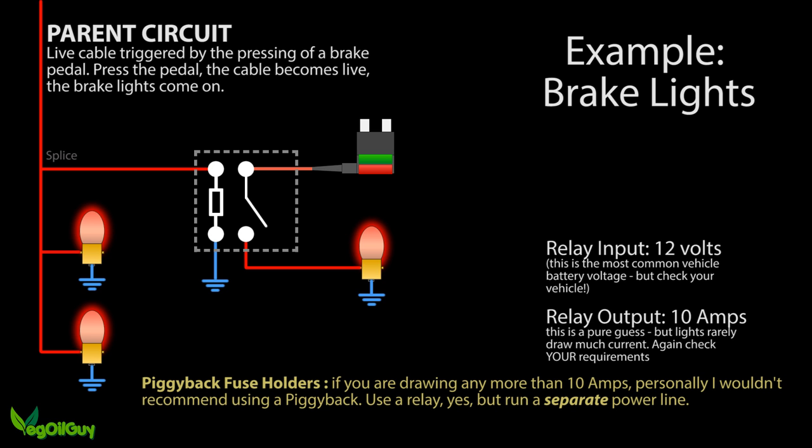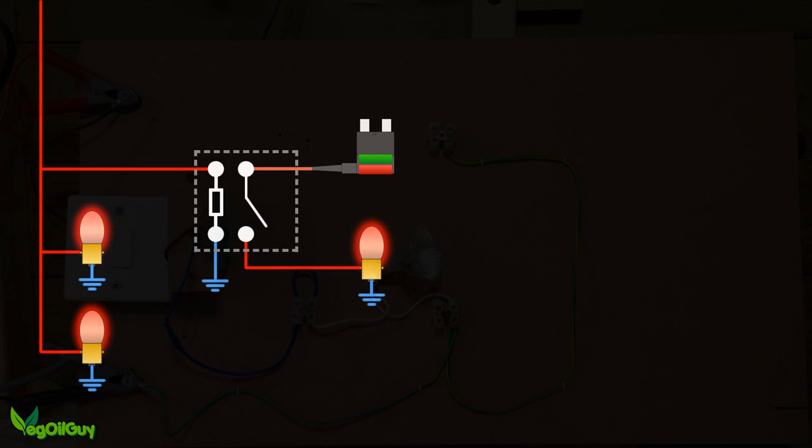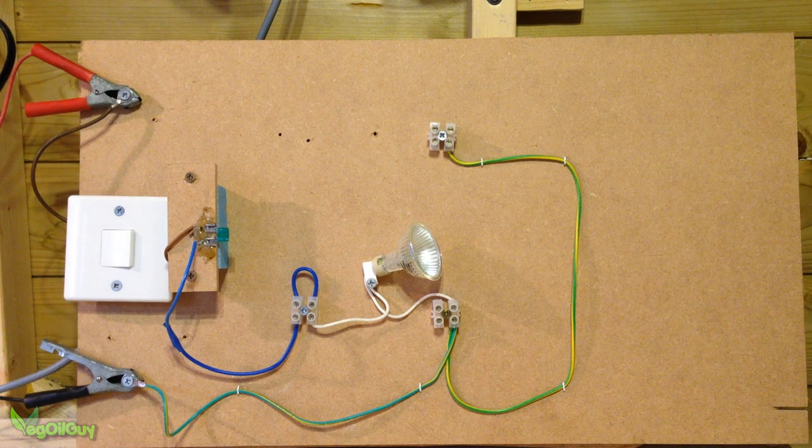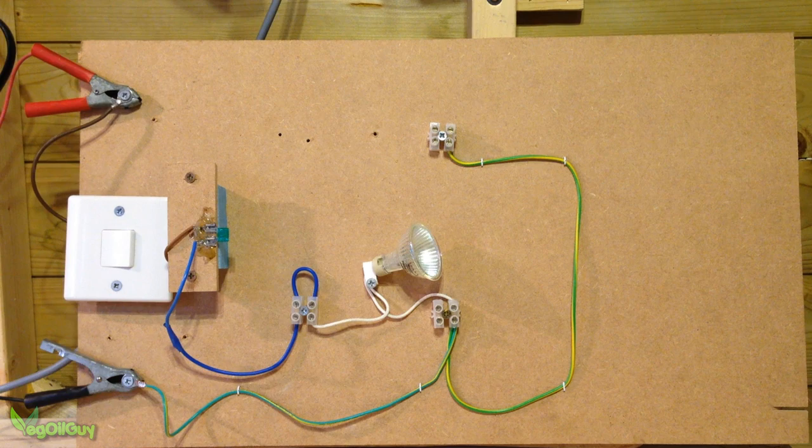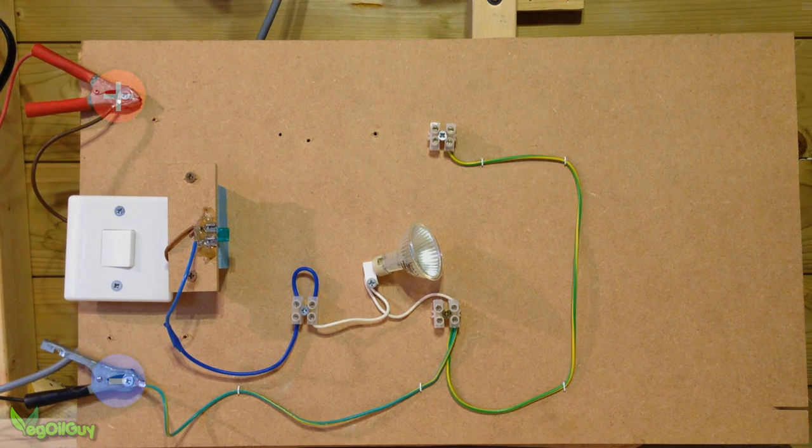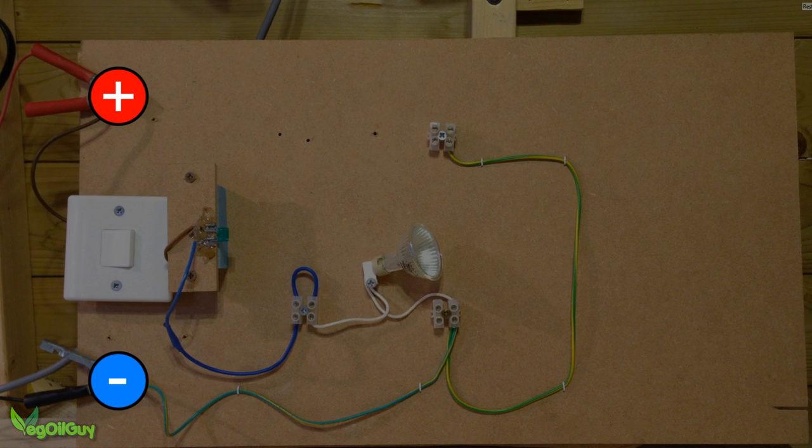So with all the theory out of the way, let's look at a real demonstration. Here we are inside my shed and here's a scrap bit of board with a few components on it, but it could just as easily be inside my car. Let's have a look what we've actually got. Well we've got the main power supply which is the battery, the positive and the negative.